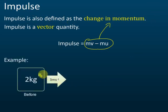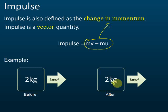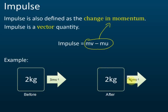For example, let's say we have an object of 2 kg, and we give a force to this object. Initially it moves with 3 meters per second. After a while, the velocity becomes 8 meters per second, so the velocity increased from 3 to 8 meters per second.